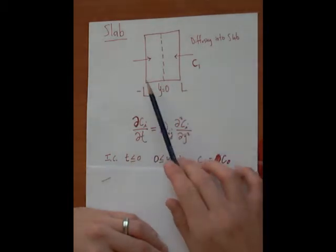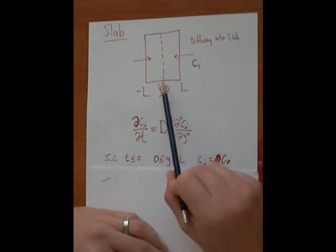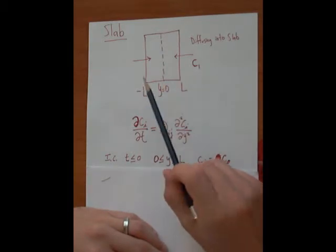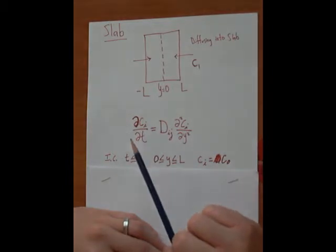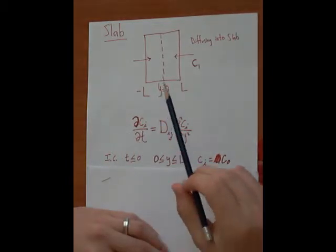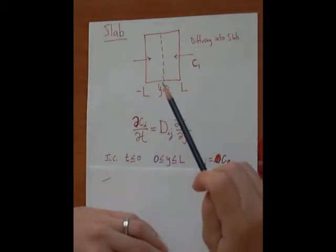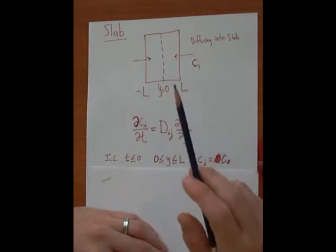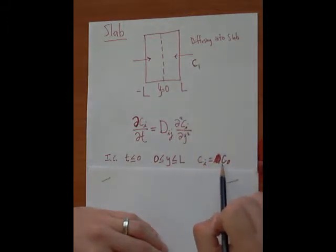I didn't go from one side to the other because we're really only worried about this half thickness here because what's happening on this side will be the same as what's happening on that side. So, before time reaches zero, the slab has initial concentration of C naught.